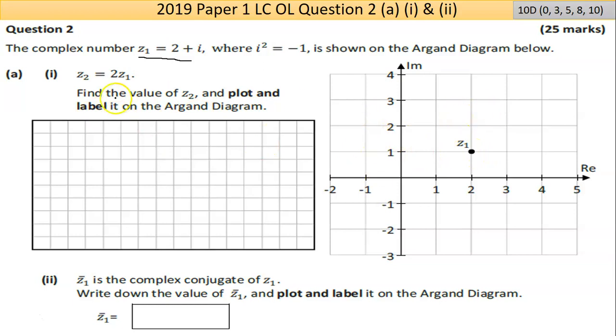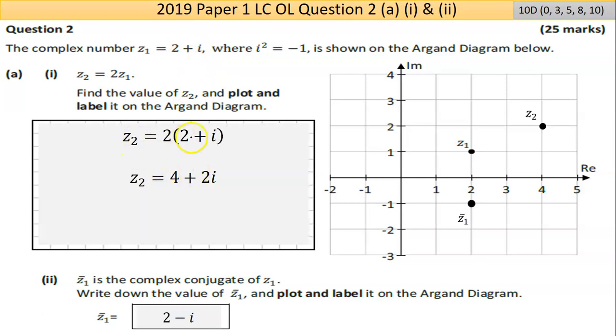They say in part one they want you to plot z2, and z2 is the same thing as twice z1. So basically you're doubling this. If you double it, well 2 times 2 is 4, 2 times i is 2i. So I've done that multiplication here just to show it. Once you've shown that, you've got marks. The 4 plus 2i is 4 in the real, so that's 4 in the real along this line here, crisscrossing with 2 on the imaginary. So that's where the point z2 is.